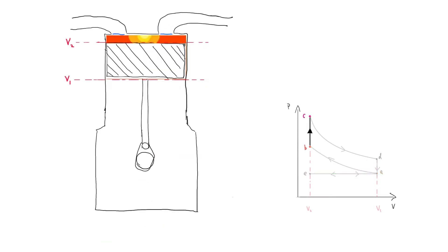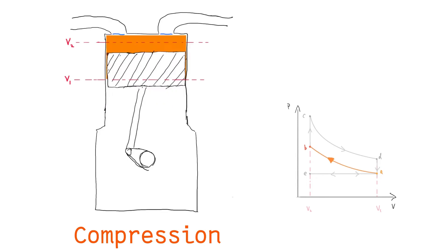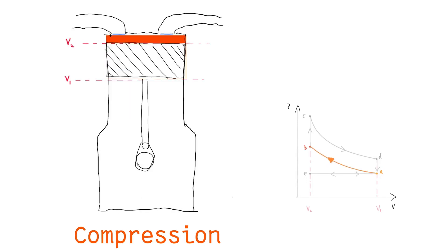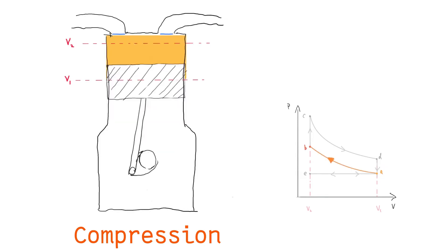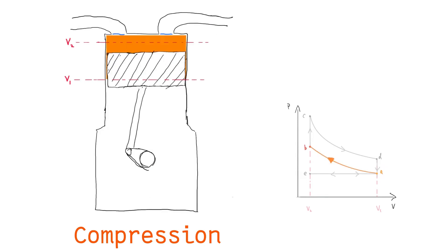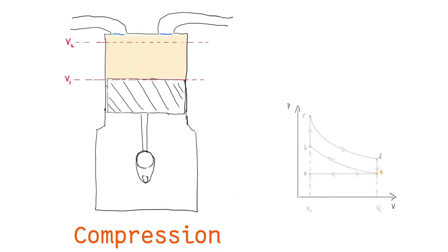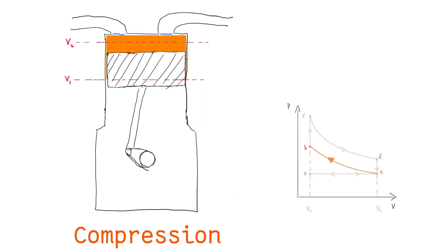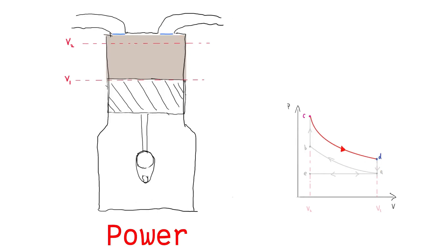Second is the compression stroke. The intake valve closes, sealing the cylinder. Then the piston extends, compressing the fuel-air mixture in an adiabatic compression. Note that up to now, it is the momentum of the crankshaft that has been moving the piston.